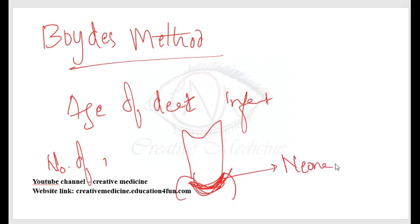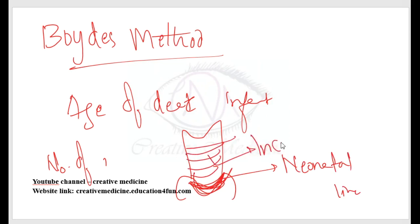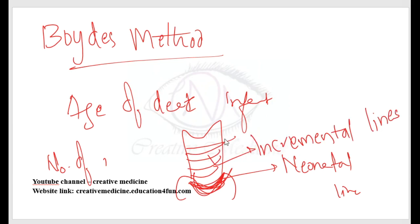By counting the number of incremental lines from the neonatal line onwards, we can estimate the age of the dead infant even close to the number of days. These incremental lines are cross striations on the enamel and are seen until the enamel is completely developed.